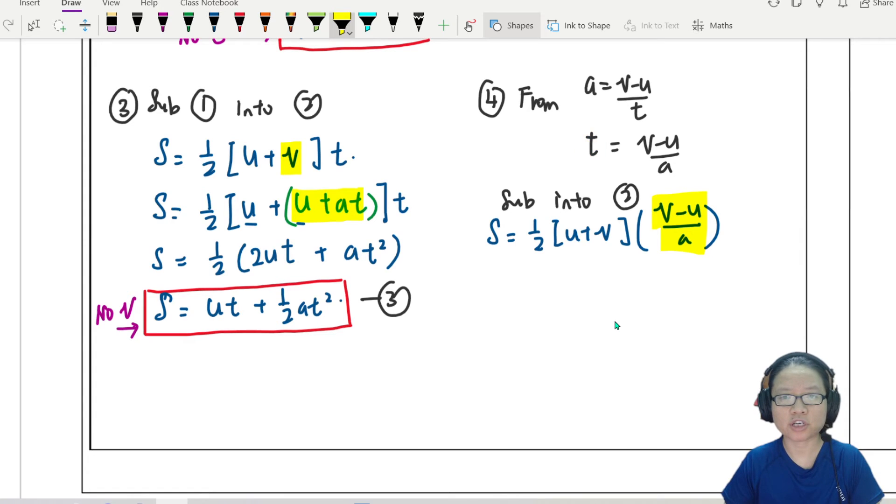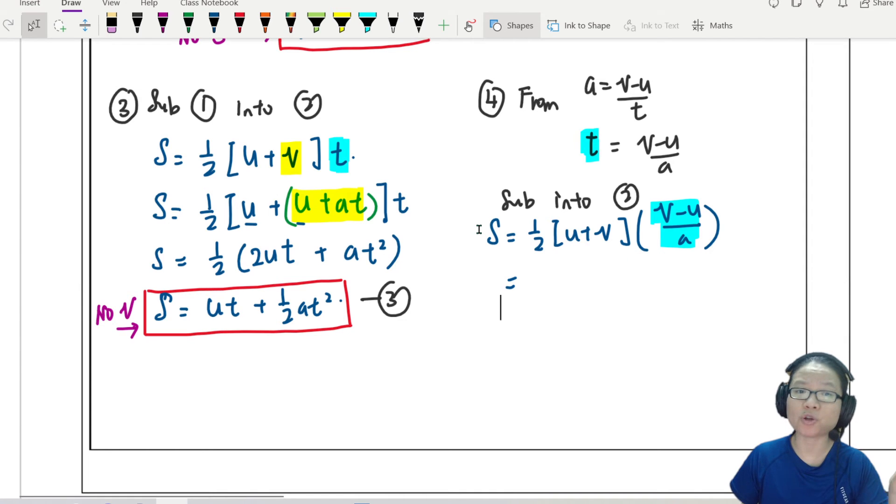So right now I'm putting in this v minus u over a as t. Well then, maybe I should change color. So this t, I substituted with this t, which is v minus u over a. Don't panic first. Does this equation look a bit scary? But you see, if I rewrite a bit, maybe I put the 2 and the a and I move it over. The 2 and a, I shift it over. So this one will be 2as.